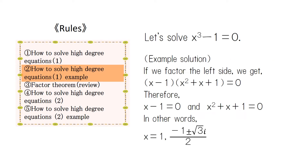Let's solve x cubed minus one equals zero. If we factor the left side, we get (x minus one) times (x squared plus x plus one) equals zero. Therefore, x minus one equals zero and x squared plus x plus one equals zero. In other words, x equals one, or negative one plus or minus square root of three times i, over two.